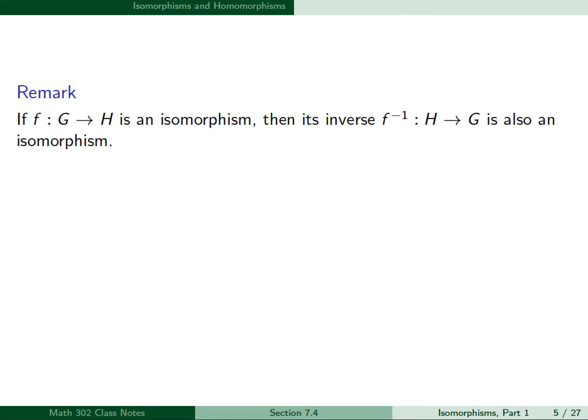If f from G to H is an isomorphism, then it can be shown that its inverse, f-inverse from H to G, is also an isomorphism. Therefore, G is isomorphic to H if and only if H is isomorphic to G.